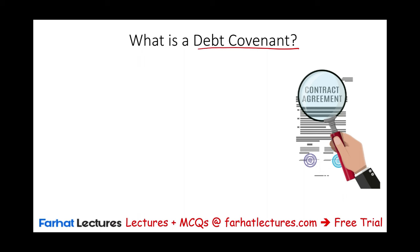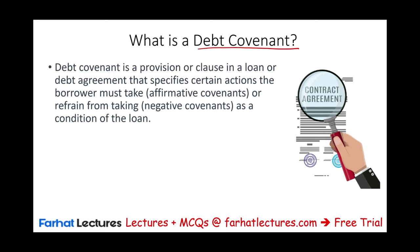What is a debt covenant? It's a provision or a clause — simply put, a certain paragraph in a loan or debt agreement — that specifies certain actions the borrower must take. They are required to do or refrain from taking as a condition of the loan.